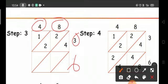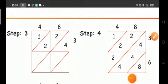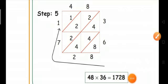Then calculate the product for each box by multiplying the digit at the top of the column and the digit at the right of the row. Now multiply 48 times 36.